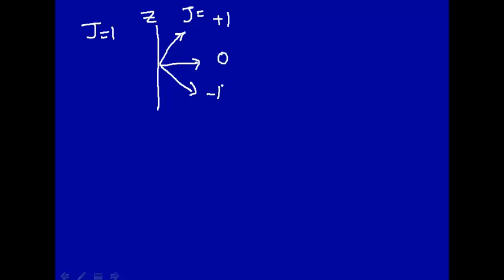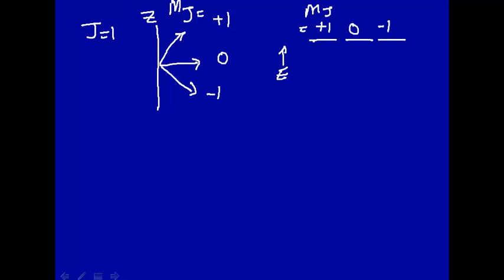0 and minus 1. This would be M sub J equal plus 1, 0 and minus 1. If we looked at the energy levels here with energy going up this way, the values for M sub J equal plus 1, 0 and minus 1 all have the same energy.